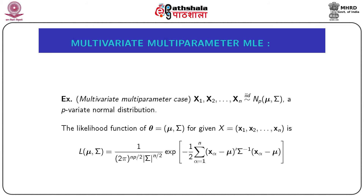In this module, we will discuss the maximum likelihood estimation of multi-parameter cases under some multivariate probability distributions. We consider two most widely used multivariate probability distributions: the multivariate normal distribution as a case of continuous probability distribution, and the multinomial distribution as a case of discrete probability distributions.